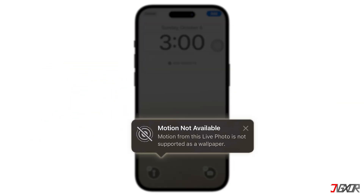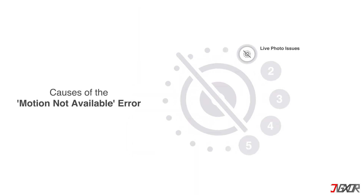The motion not available error on iPhone live wallpapers can be caused by several factors. First, live wallpapers must be set from a live photo, not a regular one. If the photo you're trying to use is a still image or the live part of it is disabled, the live wallpaper feature won't work. Second, iOS 18 could have a bug or temporary glitch causing the live wallpaper feature to malfunction. Bugs in new iOS versions are common and typically get patched in subsequent updates. Third, live wallpapers require haptic touch or 3D touch on older devices. If these features are turned off or set too high in sensitivity settings, live wallpapers may not work.